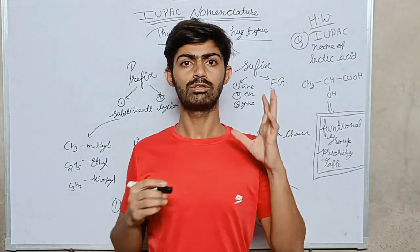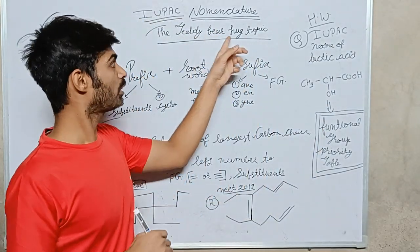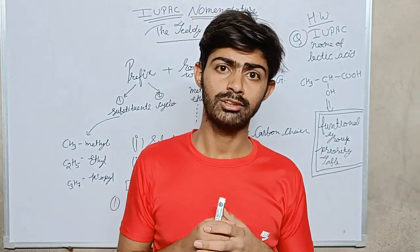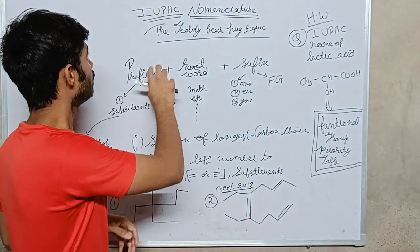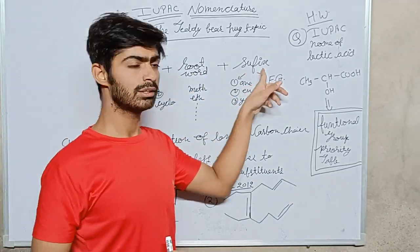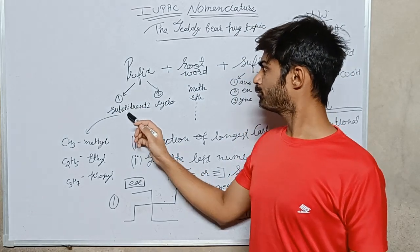Hello students, today I am going to teach you IUPAC nomenclature, the teddy bear hug topic, because it is very easy, just like hugging a teddy bear. IUPAC name contains three parts: prefix, root word, and suffix. Prefix includes substituents and cyclo.